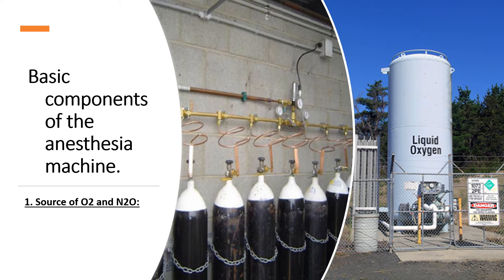The basic component of the anesthetic machine is first of all the source of oxygen and nitrogen. The source of oxygen can come in cylinders that are connected to the pipeline, as you can see in this first picture — cylinders that are color coded, connected to the pipeline of the hospital. This is used in moderate size medical facilities. The other source is liquid oxygen, a large tank of liquefied oxygen under pressure, used in large medical facilities.